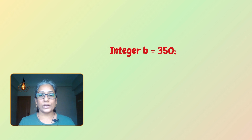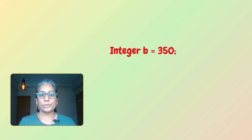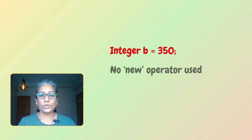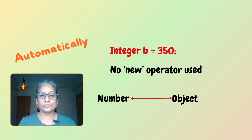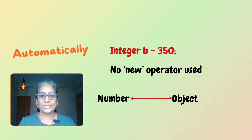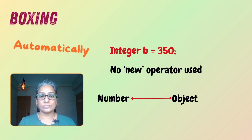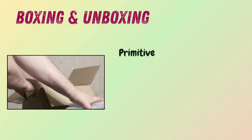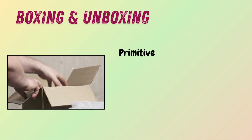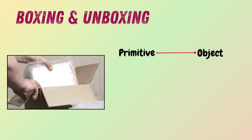Let's look at this statement again. Here we are assigning the value 350 to a variable named b. Even though we don't use the new operator, Java automatically converts the number to an Integer object behind the scenes. This process is called boxing.